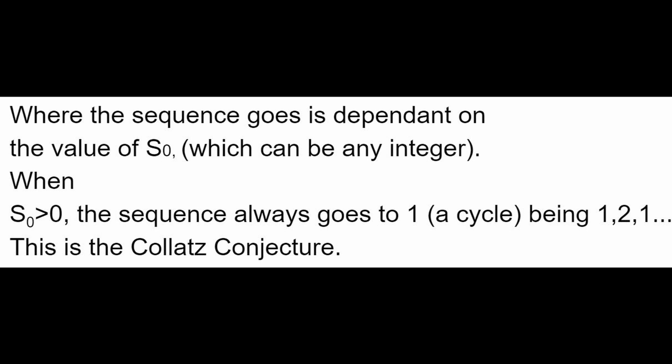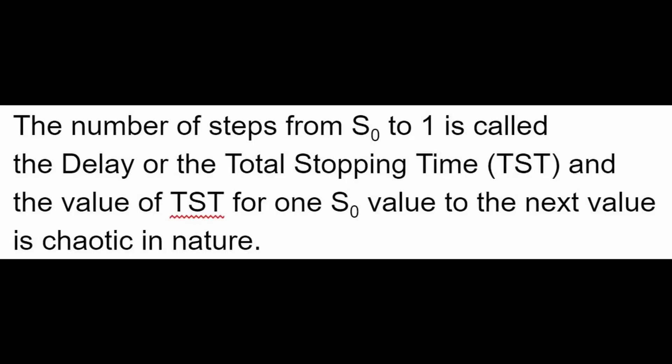When S0 is greater than 0, the sequence always goes to 1, which is a cycle: 1, 2, 1, 2, 1 — the trivial cycle. This is called the Collatz Conjecture. The number of steps from S0 to 1 is called the delay or the total stopping time, and the value of the total stopping time from one S0 value to the next is chaotic in nature.